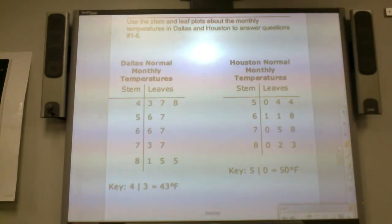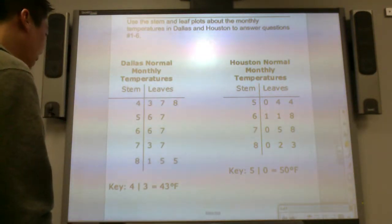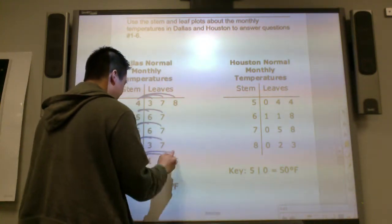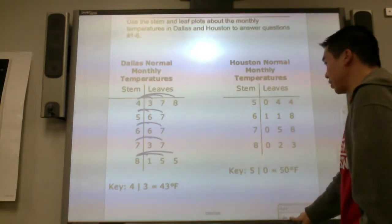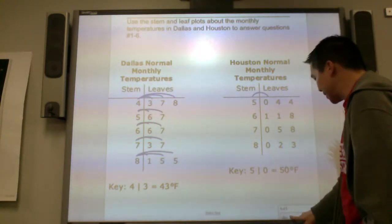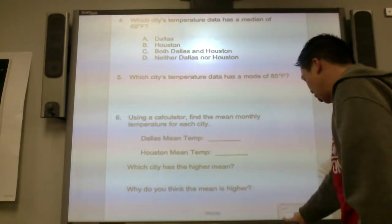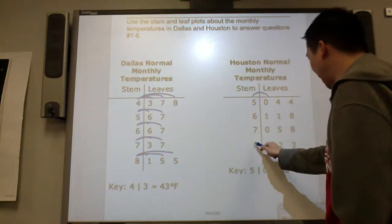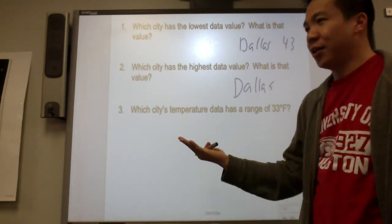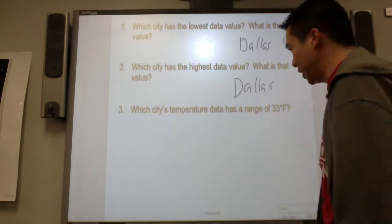Use the stem and leaf plot about the monthly temperatures in Dallas and Houston to answer the questions. Reading the data: forty-three, forty-seven, forty-eight, fifty-six, fifty-seven, sixty-six, sixty-seven, seventy-three, seventy-seven, seventy-one, eighty-five, eighty-five, and so on. Which city has the lowest data value? Dallas has forty-three, which is the lowest. Which city has the highest data value? Dallas again, with eighty-five. Dallas does have extreme temperatures — it gets really cold and in summer doesn't have the cool gulf breeze from the Gulf of Mexico.